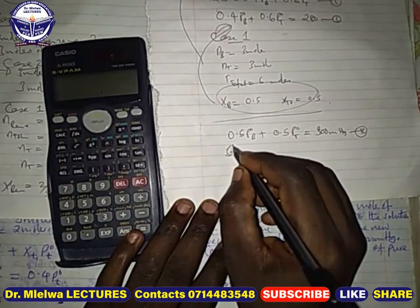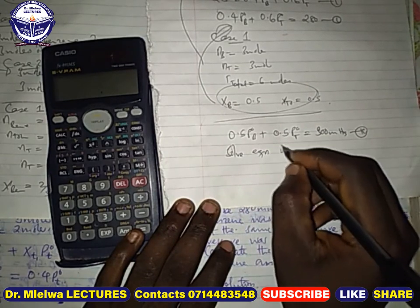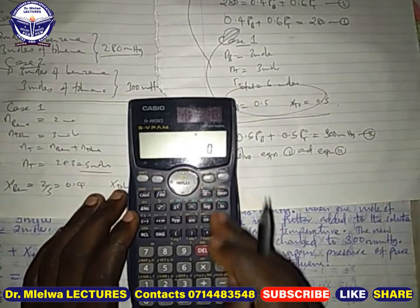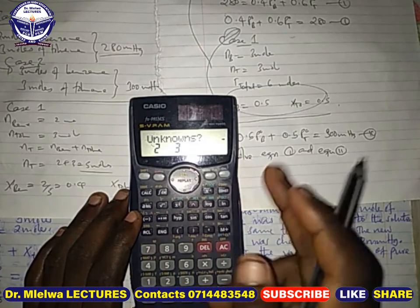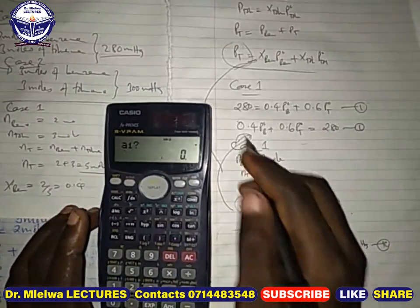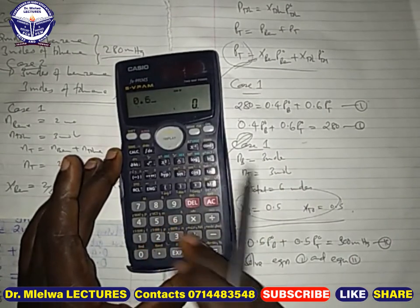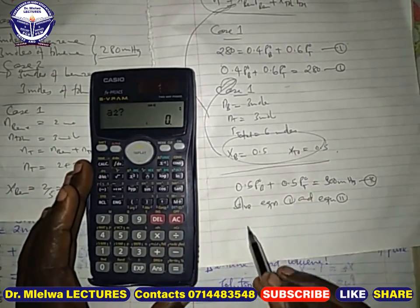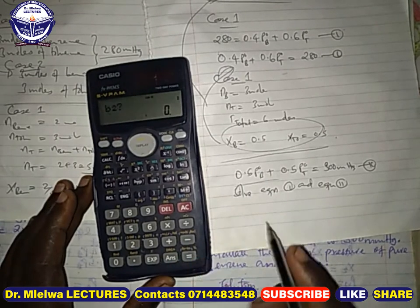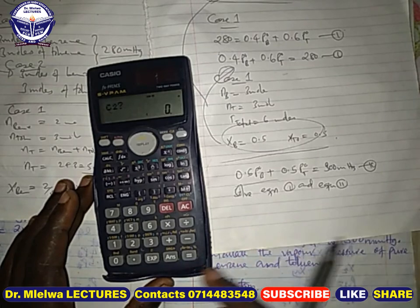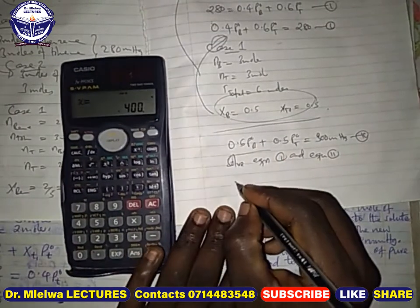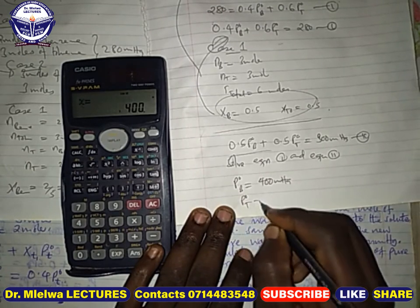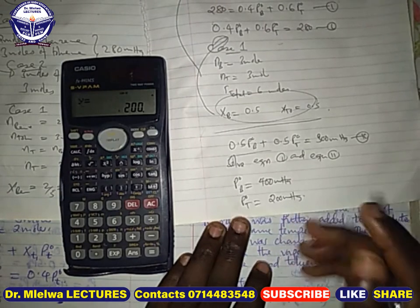Now solve equation 1 and equation 2 simultaneously. Using the calculator's equation mode with two unknowns: for equation 1, a1 = 0.4, b1 = 0.6, c1 = 208; for equation 2, a2 = 0.5, b2 = 0.5, c2 = 300. Solving gives the vapor pressure of pure benzene and the vapor pressure of pure toluene. The question is straightforward once you set it up this way.